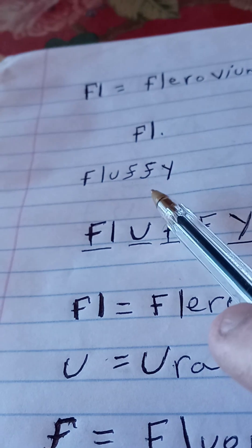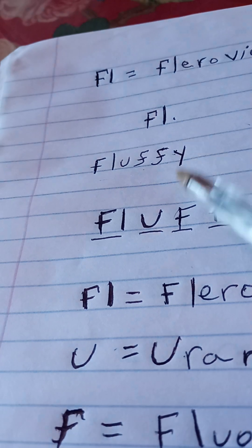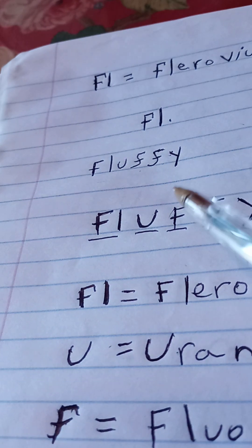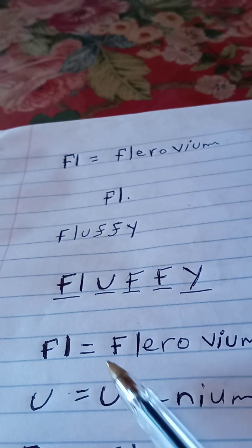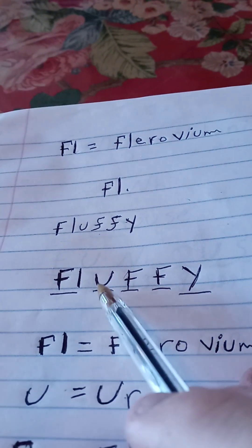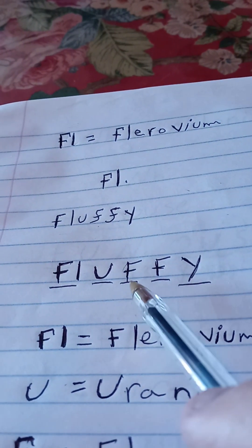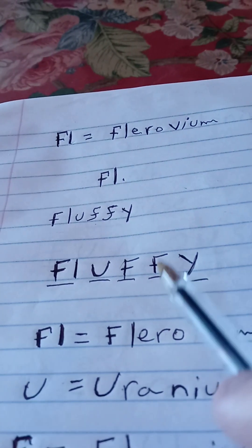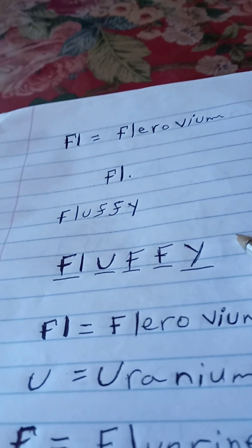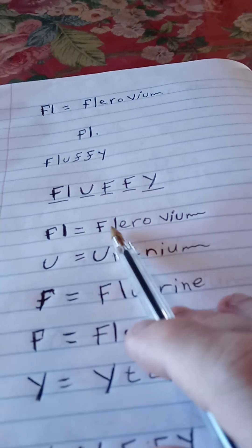Now Fluffy, let's put it in the way that you will see these chemical symbols in the periodic table of elements. Fluffy, well you got the capital F and the small L for Flerovium, you got capital U for Uranium, you got capital F for Fluorine, and you got capital F for Fluorine again, and you got capital Y for Yttrium. And you got Fluffy, you see that?